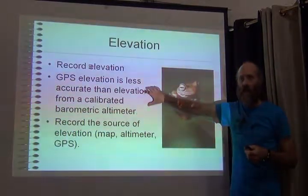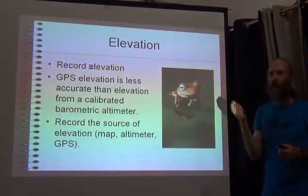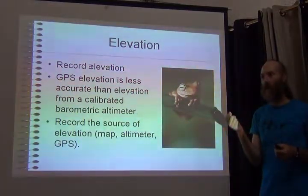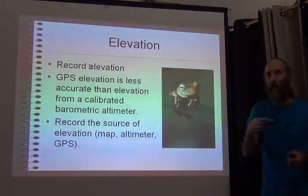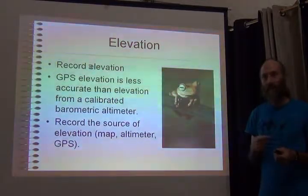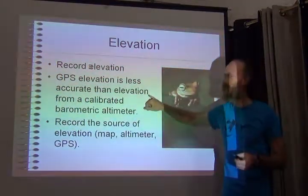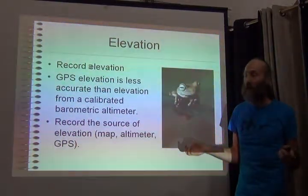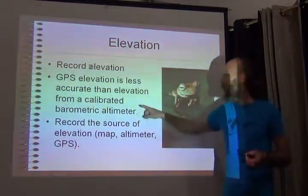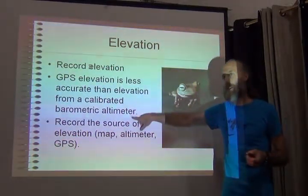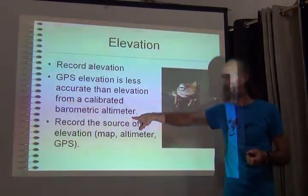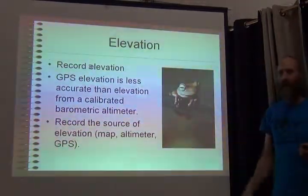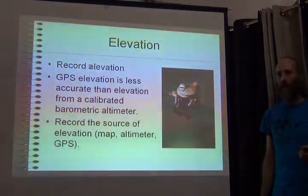Interestingly, the elevation you get from your GPS is not very good — it's much worse than the horizontal distance accuracy. A much better way to get elevation is either from a high-quality map combined with a GPS position, or to use a calibrated barometric altimeter. I know this not because I read the theory, but because I experienced the problem myself.